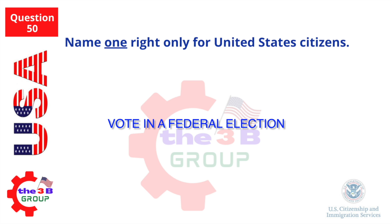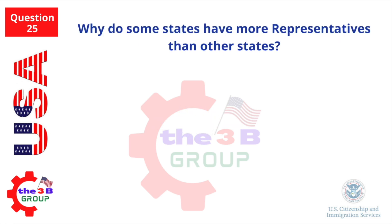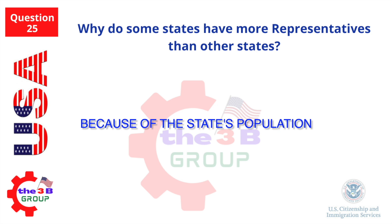This answer will vary. Name one right only for United States citizens. Vote in the federal election. Who did the United States fight in World War II? Japan, Germany, and Italy. Why do some states have more representatives than other states? Because of the state's population.